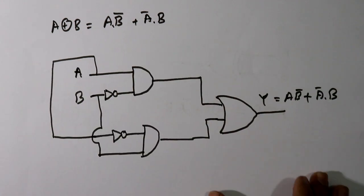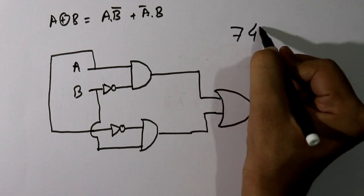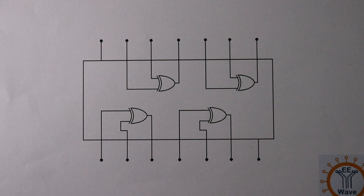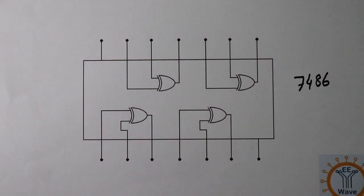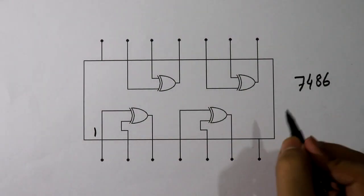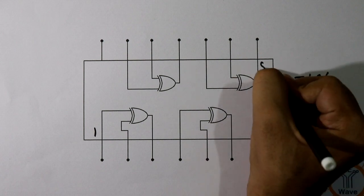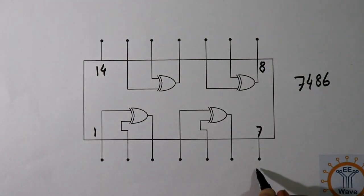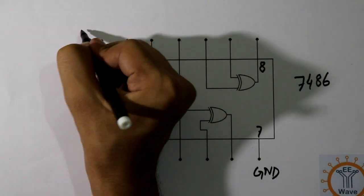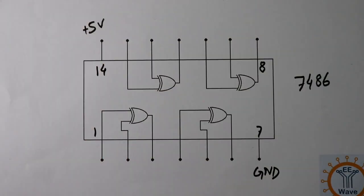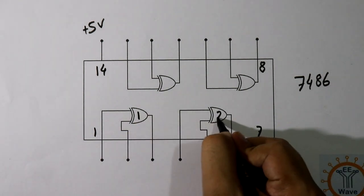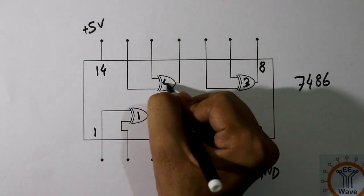For this operation we have the IC 7486. This is pin number 1, pin number 7, pin number 8, and pin number 14. Pin 7 is connected to ground, pin 14 is connected to plus 5 volt. This IC has 4 XOR gates: XOR 1, XOR 2, XOR 3, and XOR 4.